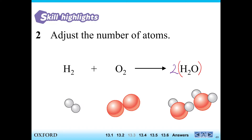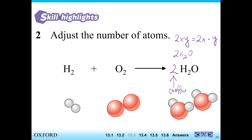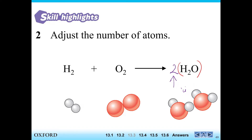Now if I didn't have this imaginary bracket, you would think this is 2H2 and still just one oxygen atom — like math where 2XY means 2X times Y. But remember in chemistry, when we write the 2 in front, this is called the coefficient. The coefficient means there is an imaginary bracket in front of it — it's not like math. That's the first point. Now let's try to see the number of atoms. On the left I have one, two hydrogen atoms, and one, two oxygen atoms.